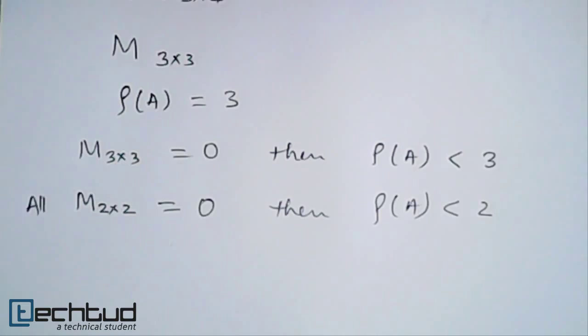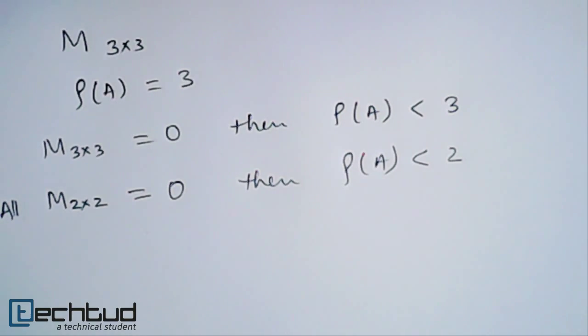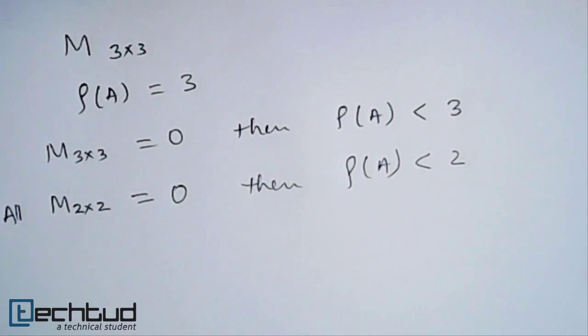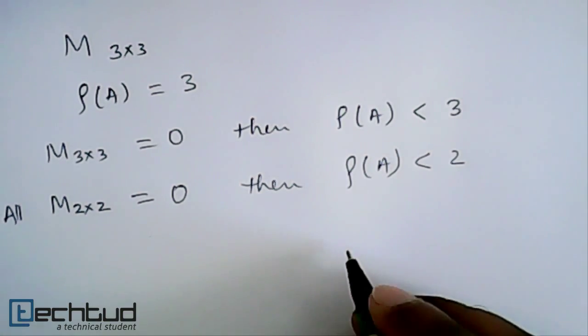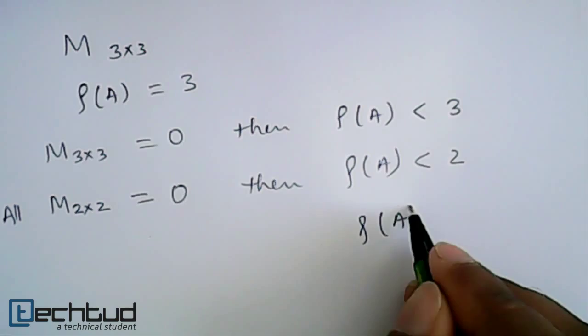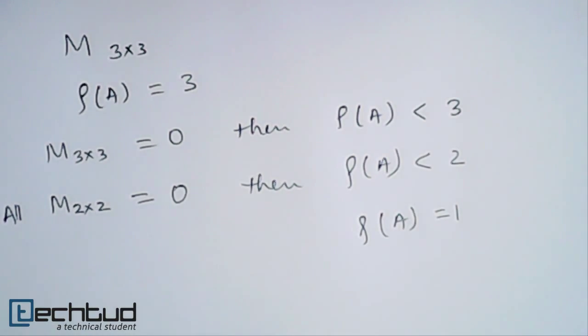If it is not a zero matrix, I mean all the elements are not 0, then you will have at least one minor which is not equal to 0, and then you will say that the rank is equal to 1.